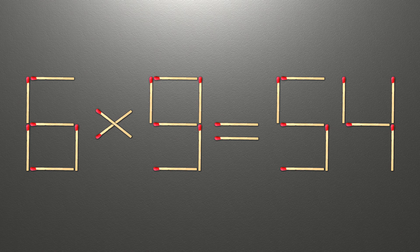Now, when we check the condition, 6 times 9 is 54, and 54 equals 54 — now our equality is correct.